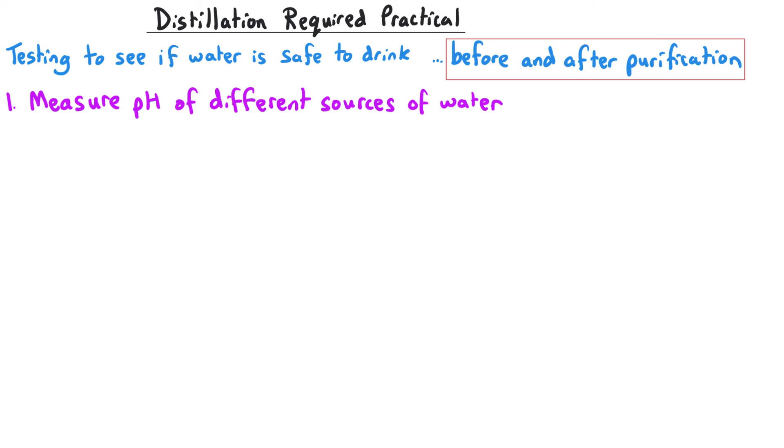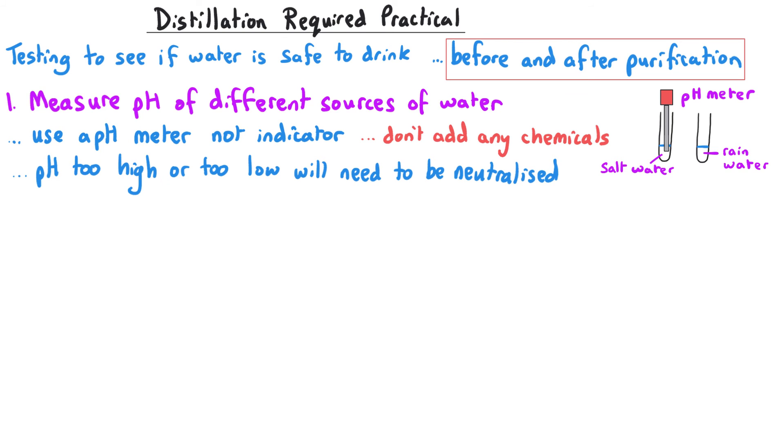The first thing we do is measure the pH of different sources of water. We would use a pH meter rather than an indicator, because if you use an indicator you're adding additional chemicals to the water we're trying to assess for purity. We would test some salt water first to see if it was pure, and if the pH was too high or too low, it would need to be neutralized by adding an acid or an alkali.